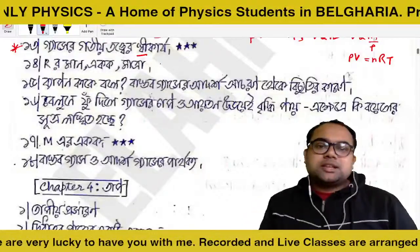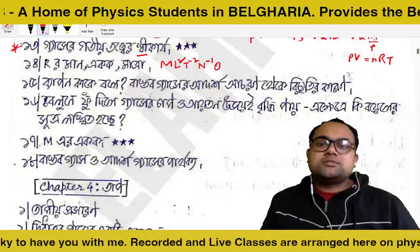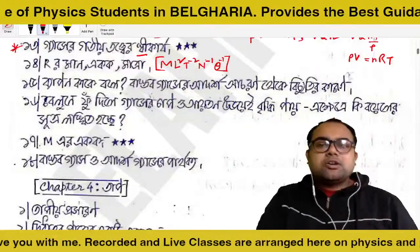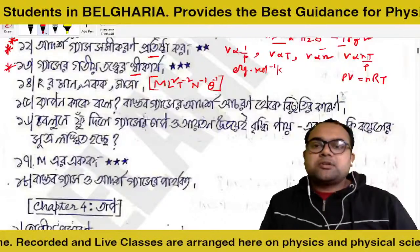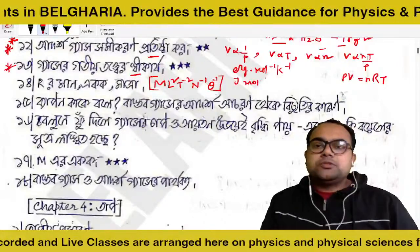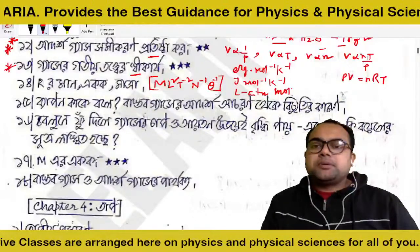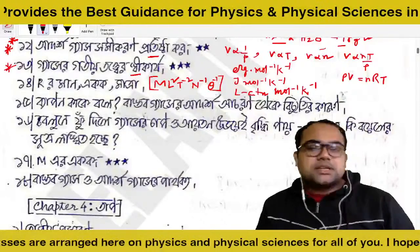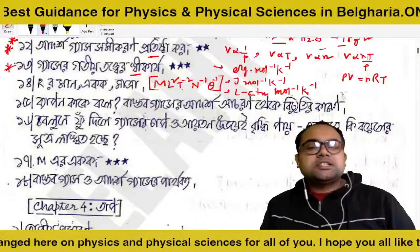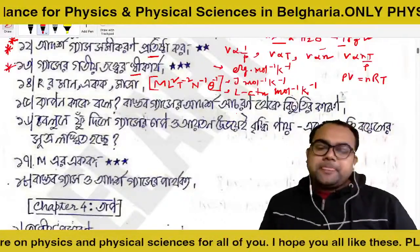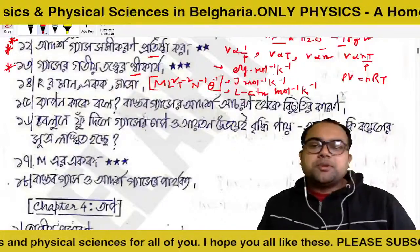The dimensional formula for R is: M L squared T to the power minus 2, N to the power minus 1, theta to the power minus 1. This is capital R. The units are: J mol to the power minus 1 K to the power minus 1; liter atmosphere mol to the power minus 1 K to the power minus 1. CGS value: 8.314 × 10 to the power 7. SI value: 8.314. Liter atmosphere value: 0.082.